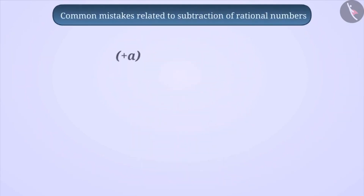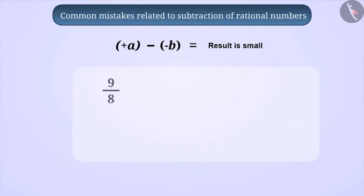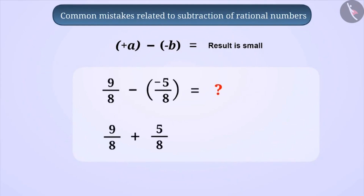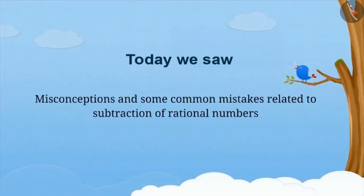If children are asked to subtract a negative rational number from a positive rational number, will the result be larger or smaller than both numbers? Often children answer that the result will be smaller, thinking that subtraction always gives smaller numbers. For example, 9/8 minus minus 5/8 can be written as 9/8 plus 5/8. Solving this gives 14/8, which is larger than both rational numbers. So keep in mind that subtracting a negative number from a positive number results in a larger number. Today we have seen the misconceptions and common mistakes related to subtraction of rational numbers.